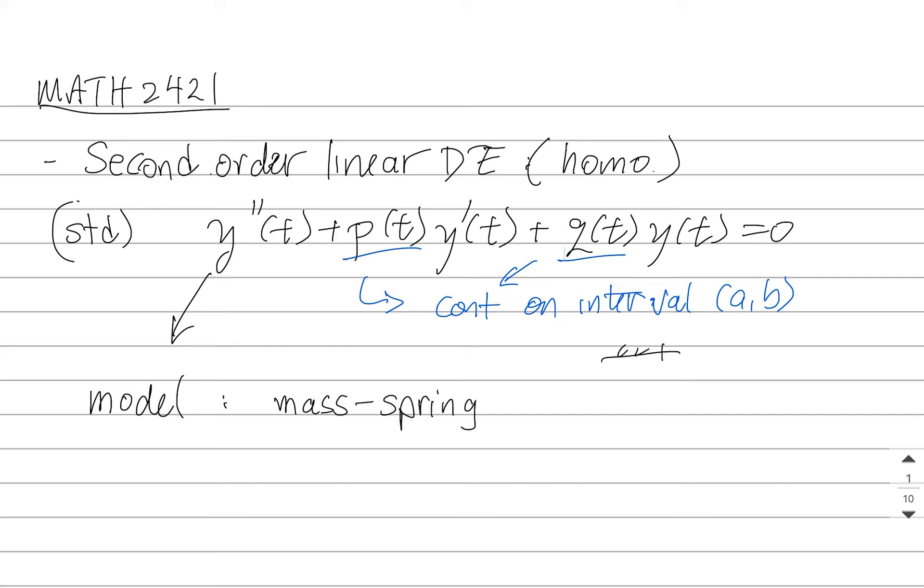So, for instance, you could have a mass hanging from a spring, and then it bounces and sets into motion. It's also a model for an RLC circuit. So if you've got a circuit with a battery, an inductor, capacitor, and resistor, then the charge Q(t) satisfies a second-order differential equation like this.